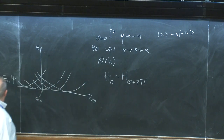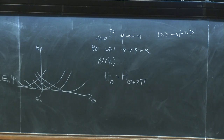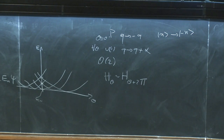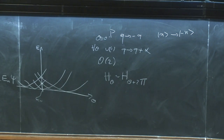Another way to see the periodicity: if we compactify Euclidean time, the integral of Q-dot is always a multiple of 2π, and that multiplies θ. The system has instantons that go around the circle n times and have weight e^{inθ}. Since n is always an integer, physics is periodic under θ → θ+2π.